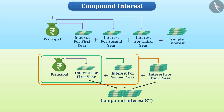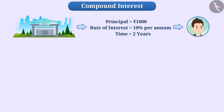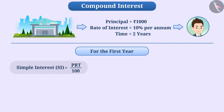Let us understand this with an example. Suppose we borrowed rupees 1000 from the bank at the rate of 10% per annum for two years, but this time we took them at compound interest. First, we will find out how much money will be there at the end of one year, using this formula to get interest.